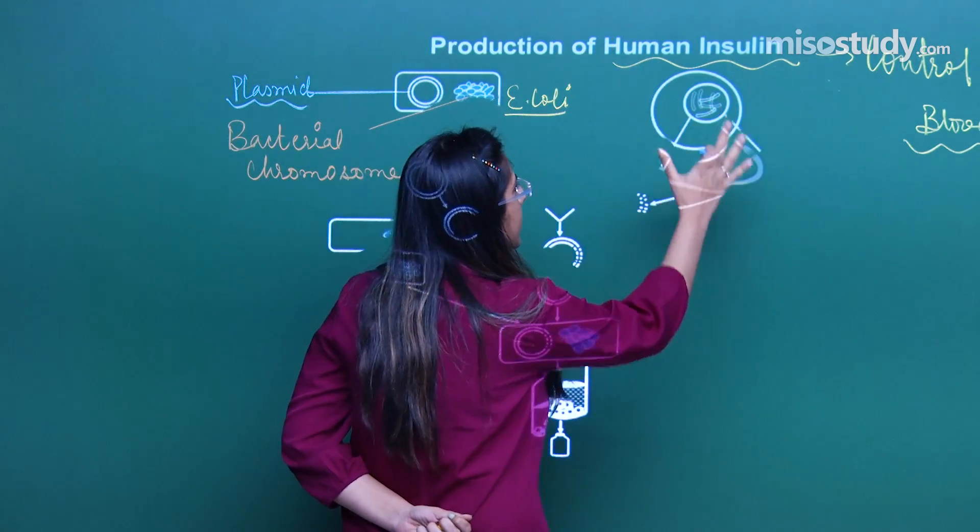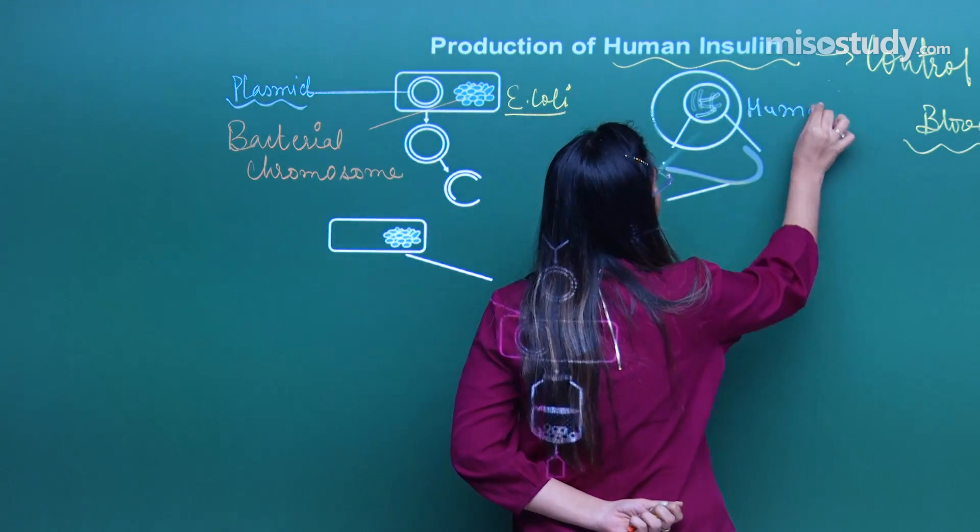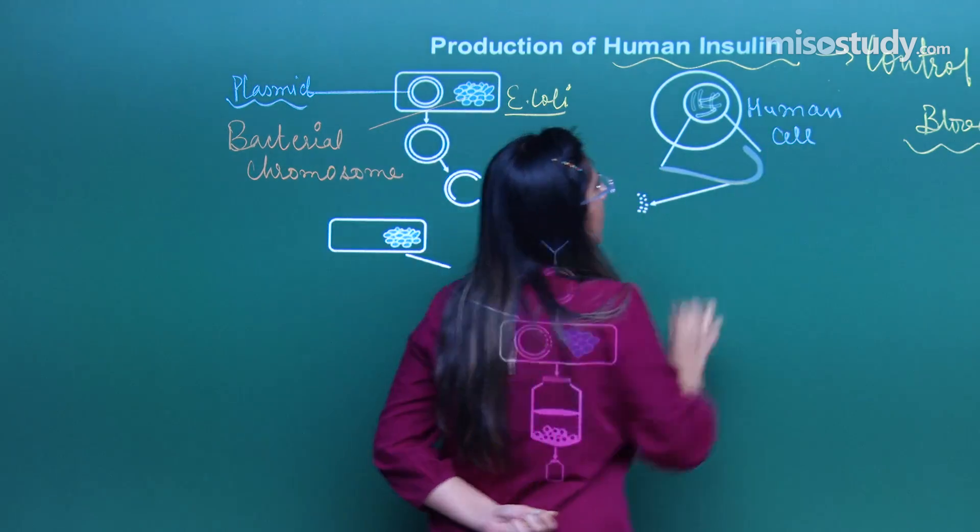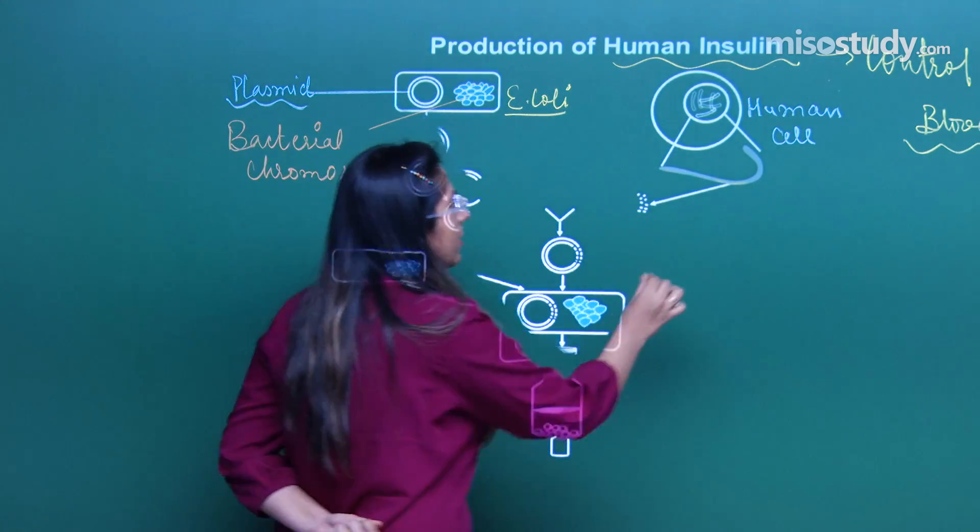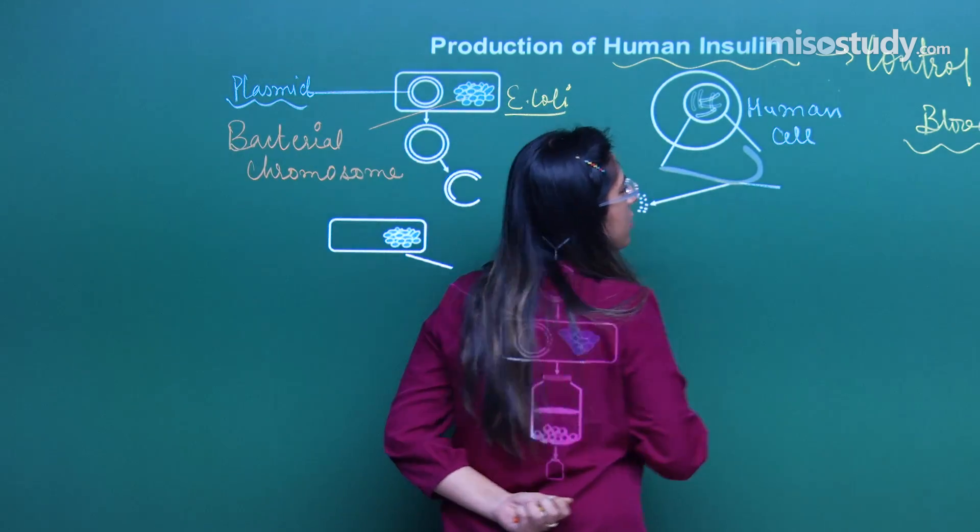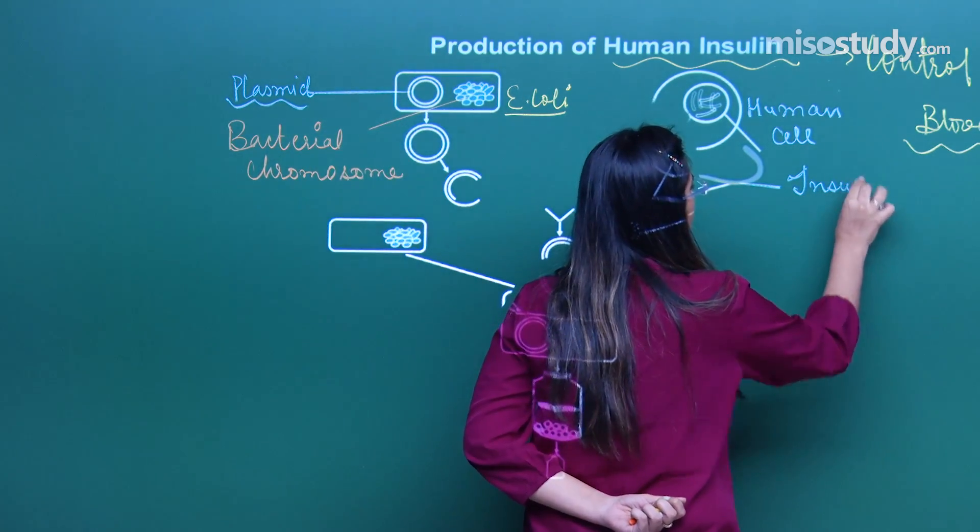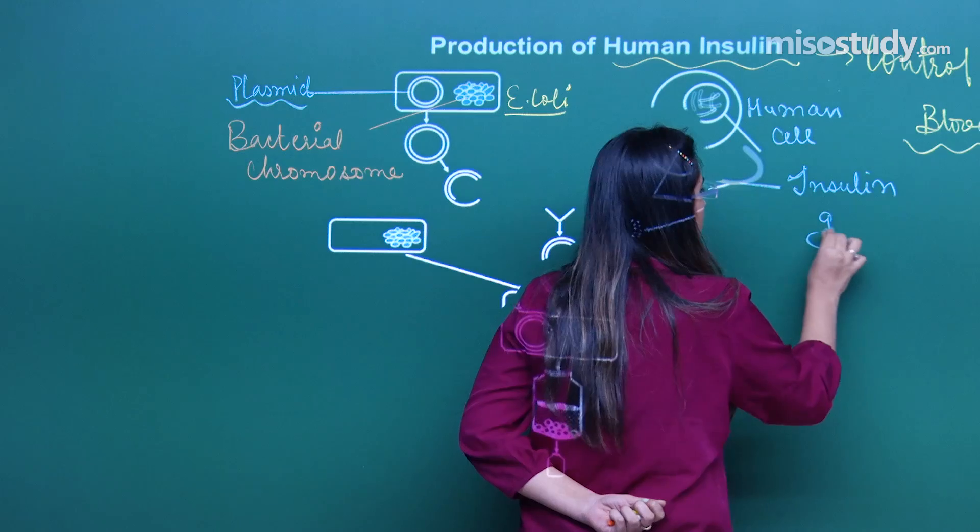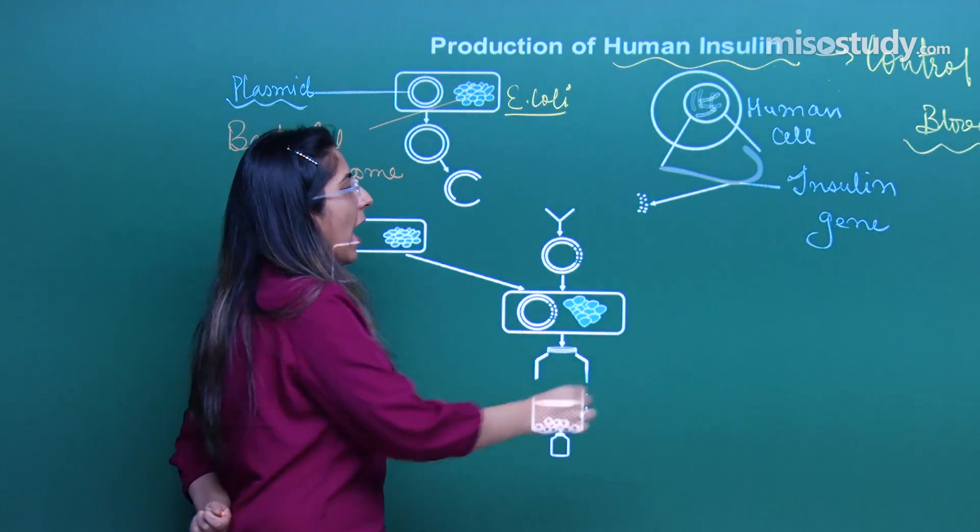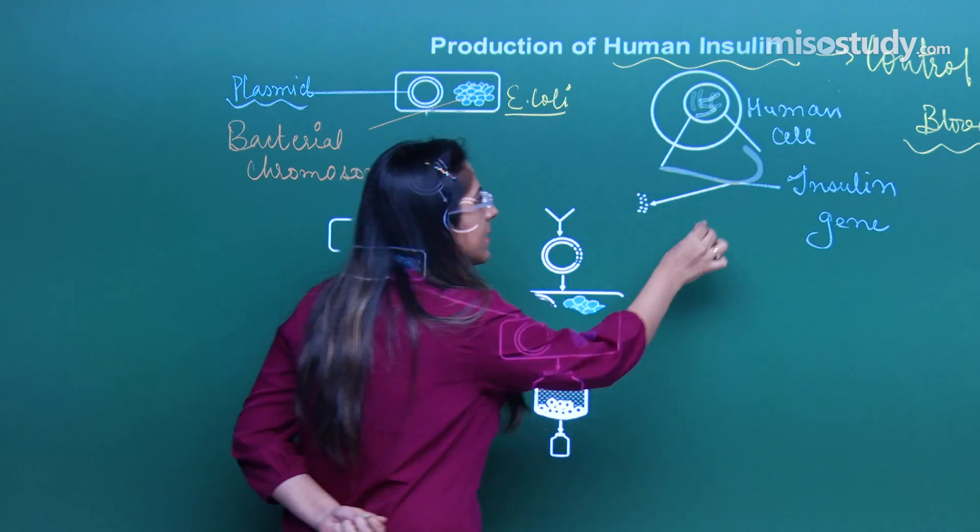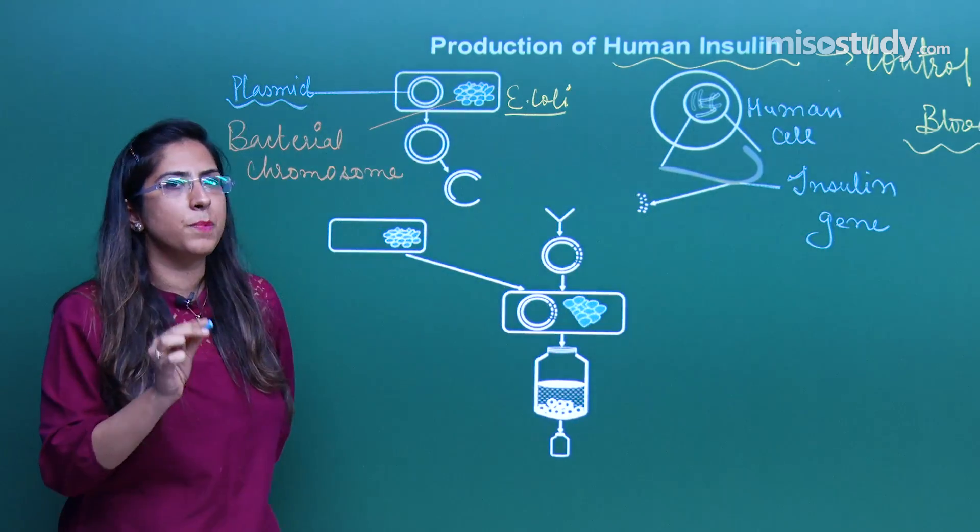On the right side, this is a human cell. From the human cell, I have extracted this DNA which is responsible for production of insulin. So I can write it as an insulin gene. I have taken out that gene. This is in yellow color which shows that insulin gene is present in it.